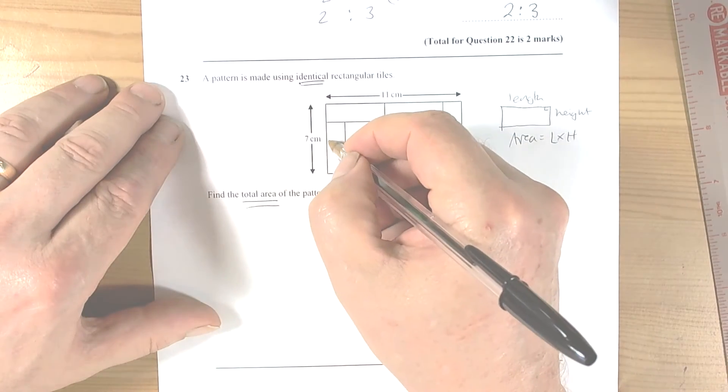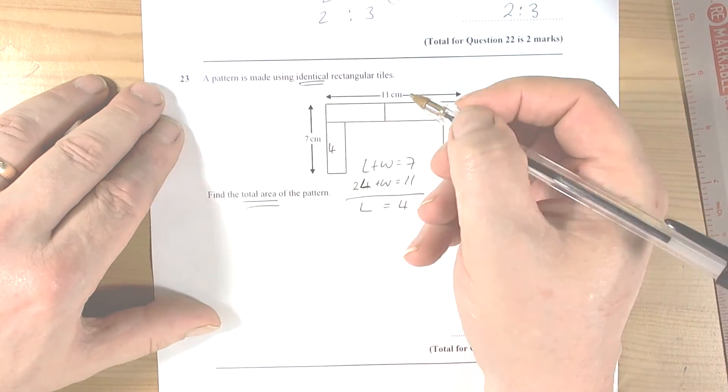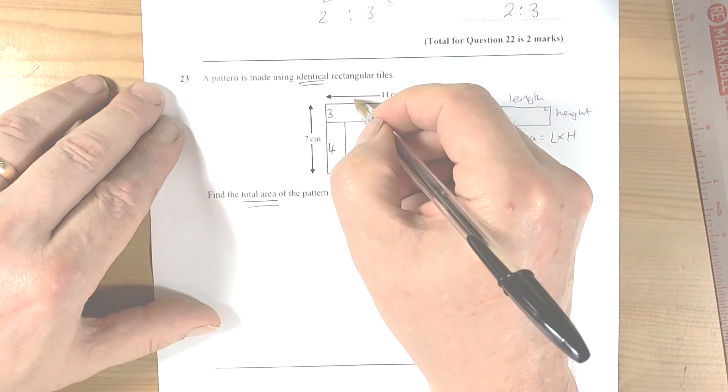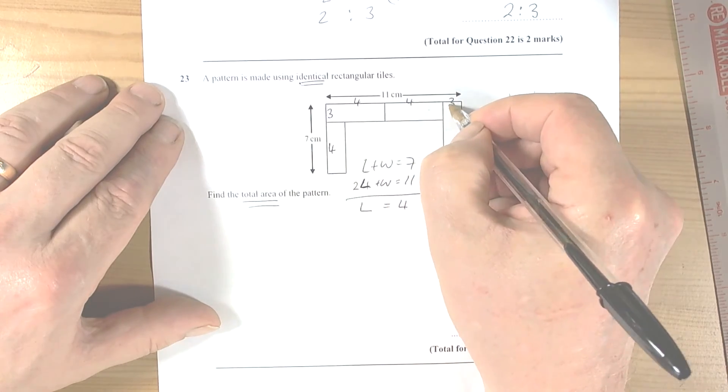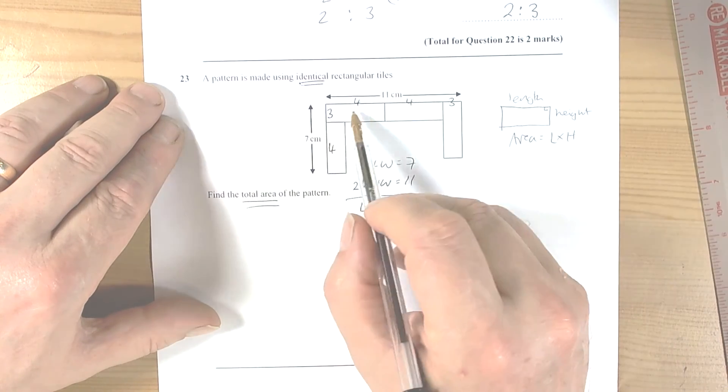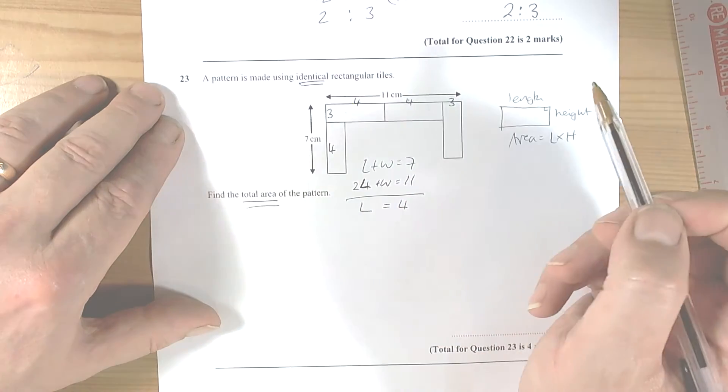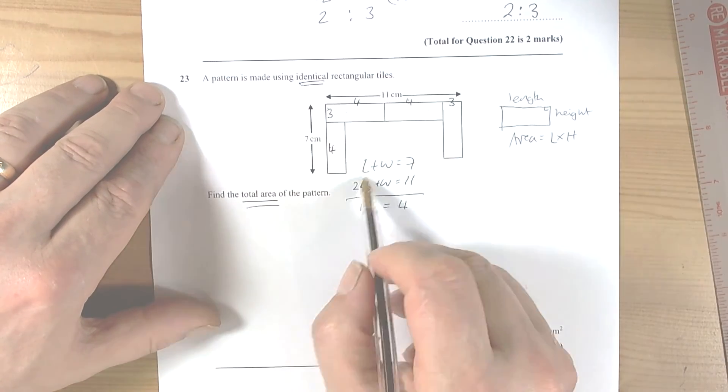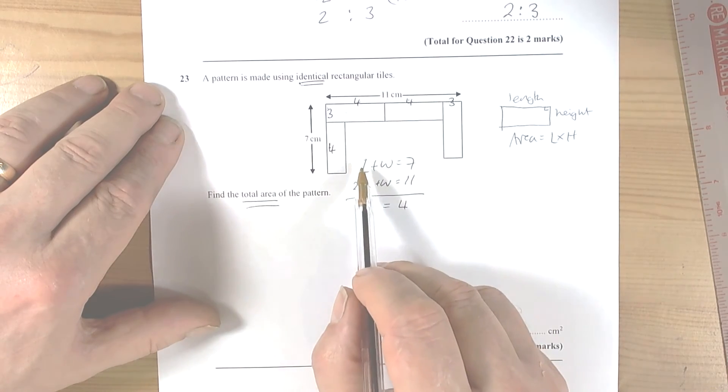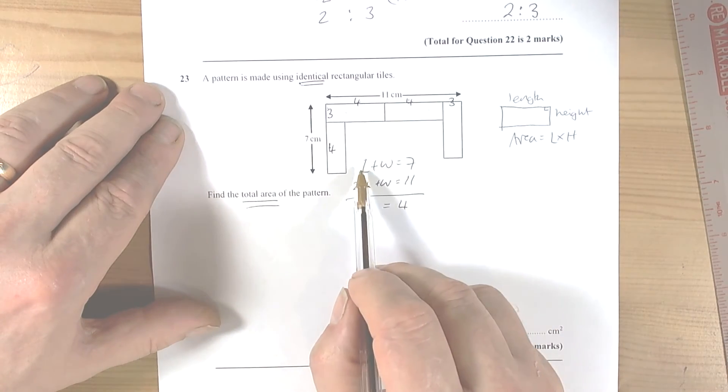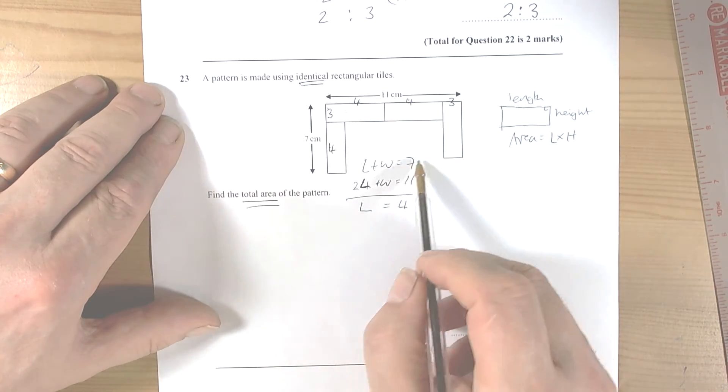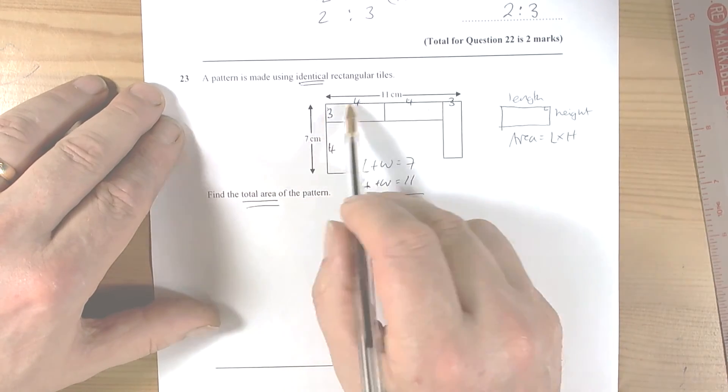So if that's true, that would make that 4, that would make that 3, that would make that 4, that 4, that 3. Does that work? 4 plus 4 plus 3 is definitely 11, 4 plus 3 is 7. Okay, so again we didn't know something, so look at what we know. We knew the length and the width of the rectangle going this way told us is equal to 7, and we knew two lengths going this way plus a width is equal to 11.